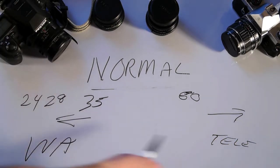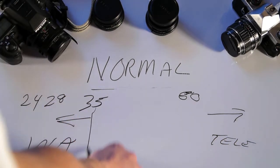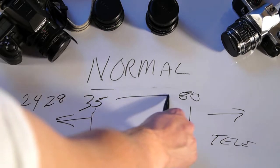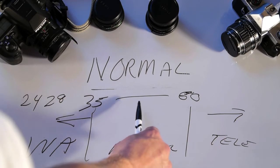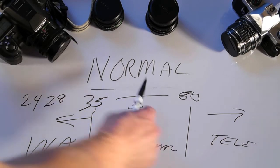Alright? So, wide angle telephoto. So, normal is somewhere in this range, between 35 and 60. This is normal. Okay, standard was a 50.